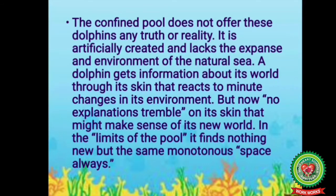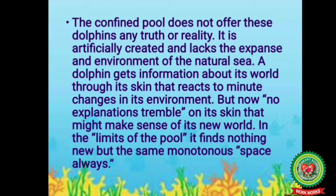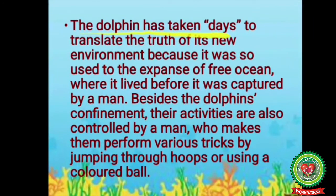The confined pool does not offer the dolphins any truth or reality — it is artificially created and lacks the expanse and environment of the natural sea. A dolphin gets information about its world through its skin, which reacts to minute changes in the environment, but now no explanations tremble on its skin to make sense of its new world. In the limits of the pool it finds nothing new but the same monotonous space. The dolphins' activities are also controlled by a man who makes them perform tricks by jumping through hoops or using a colored ball.